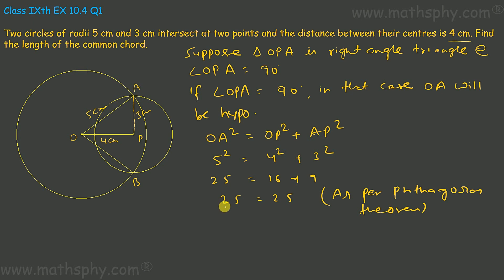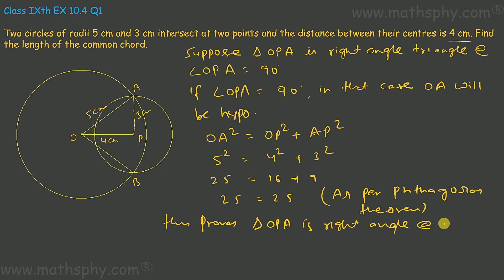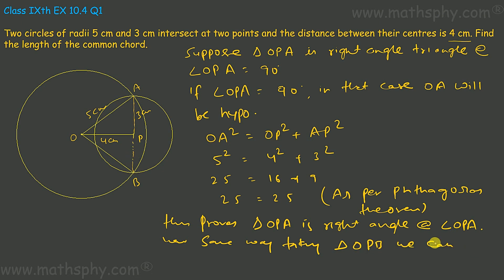As per Pythagoras theorem, we have found that OA squared equals OP squared plus AP squared. This proves triangle OPA is right angle at angle OPA. In the same way, taking triangle OPB, we can prove angle OPB is 90 degrees.